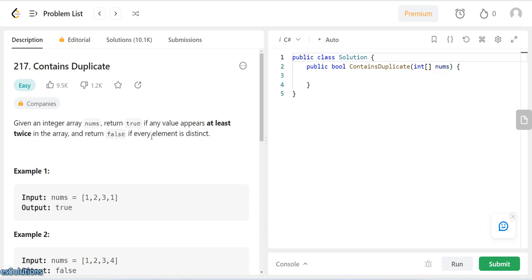Now this algorithm says that given an integer array nums, we are to return true if any value appears at least twice in the array, but we are to return false if every element is distinct. For example, we have one two three one, this returns true because ones appear twice, and one two three four returns false because no number appears at least twice.